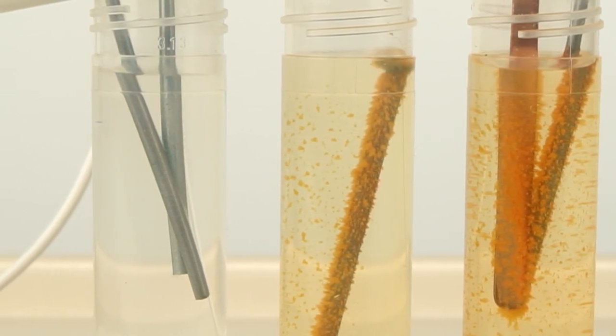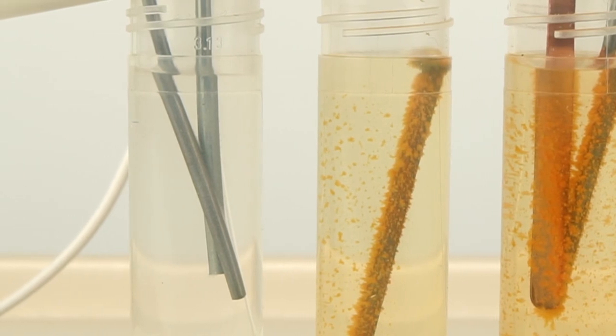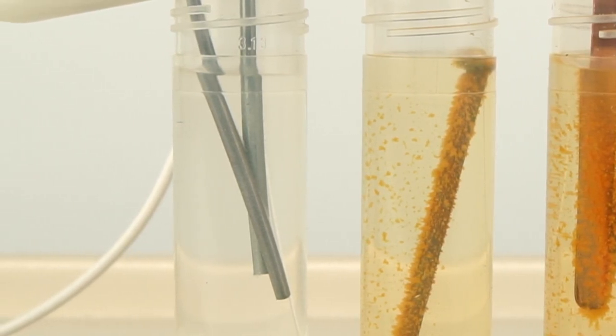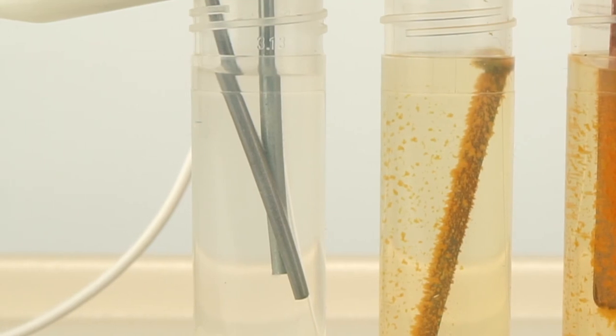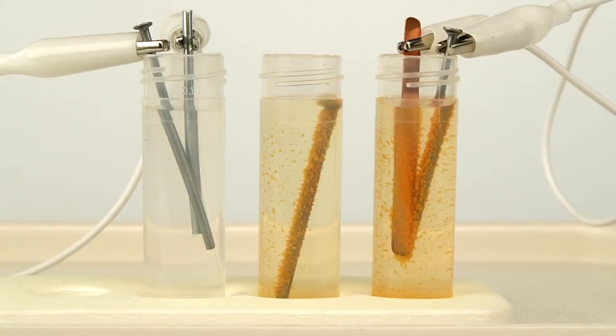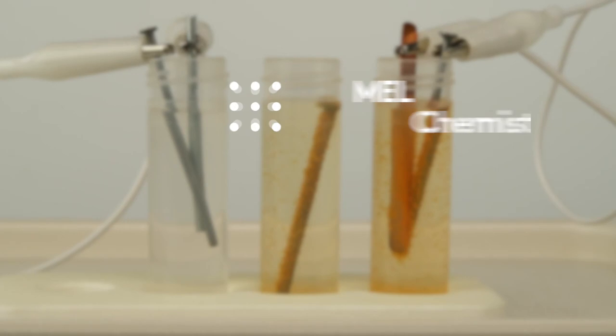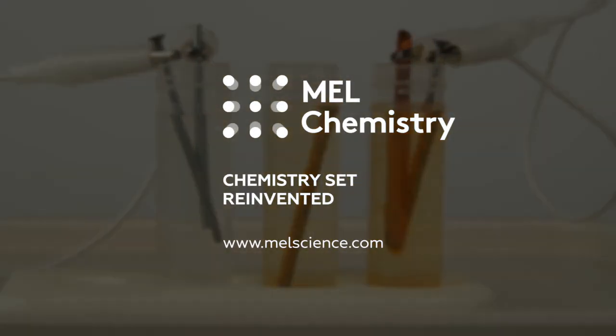In the iron-zinc setup, zinc is the more reactive of the two. When electrons leave the zinc rod, it rusts and in so doing protects the iron nail from corrosion. Learn more about this experiment on our MEL Science website.